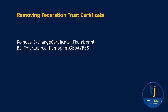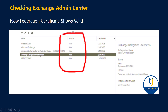Now you can remove the old expired federation certificate from your Exchange server. Run the commandlet Remove-ExchangeCertificate with the expired thumbprint. Once done, your old expired Exchange federation certificate is removed. Log into your Exchange and there will be no error — the Exchange delegation federation certificate is now valid and is valid until 2030. I hope you can fix the same problem, and I hope the video was informative. See you in the next video.